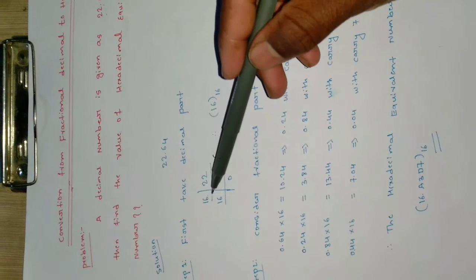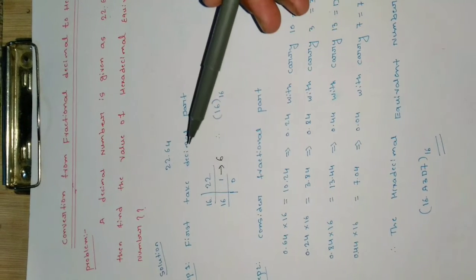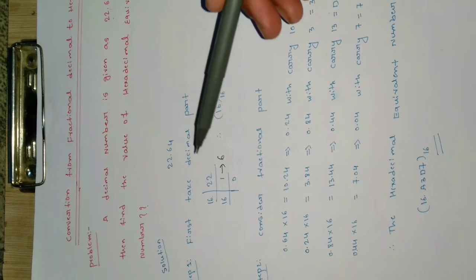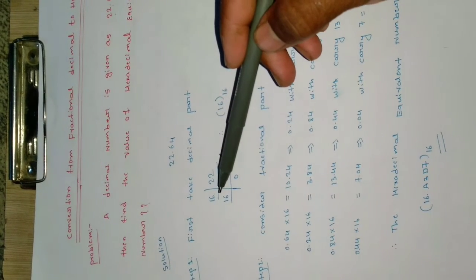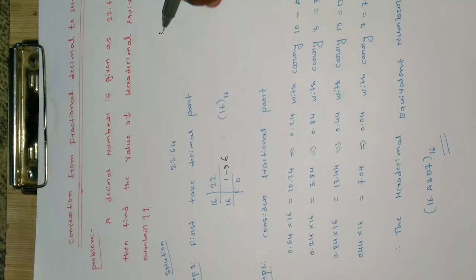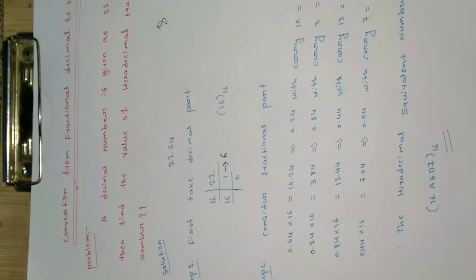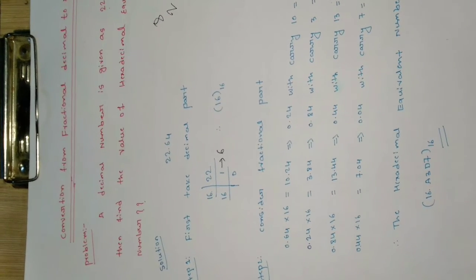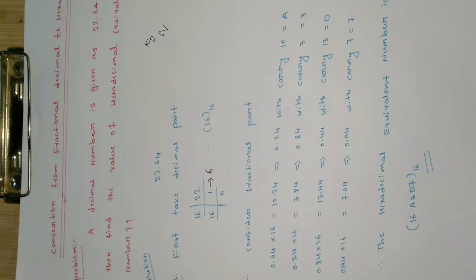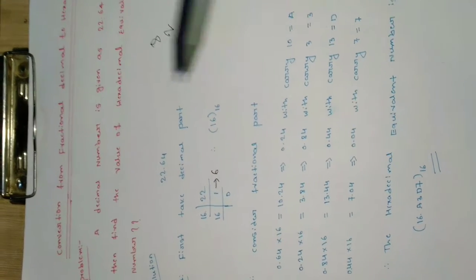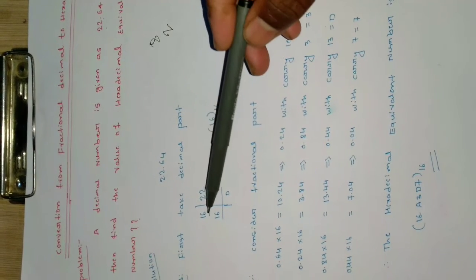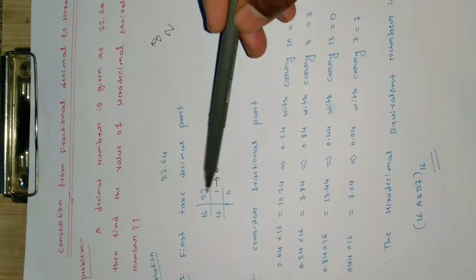I have taken 22 and I am dividing it by 16, since we are converting to hexadecimal and the base value is 16. If converting to octal we divide by 8; if converting to binary we divide by 2. So depending on the target base we choose the divisor. Here the divisor is 16, so 22 divided by 16: 16 ones are 16.